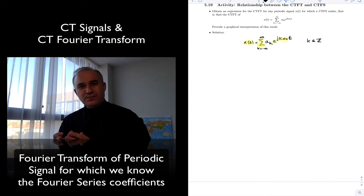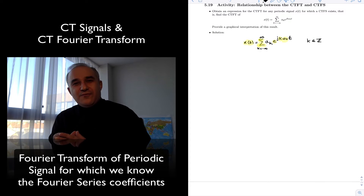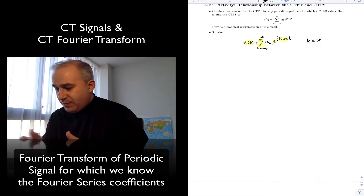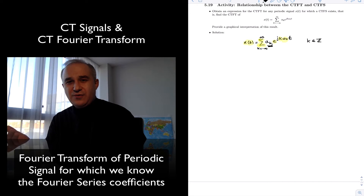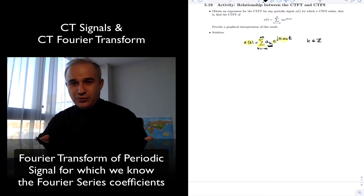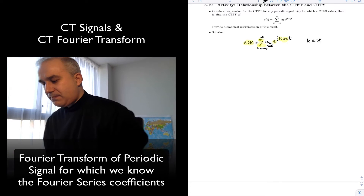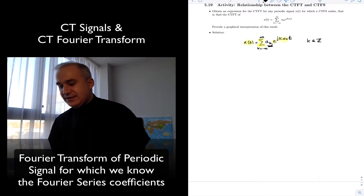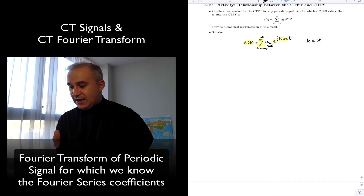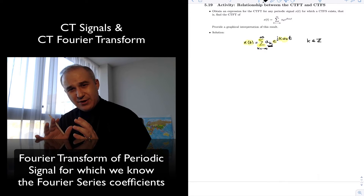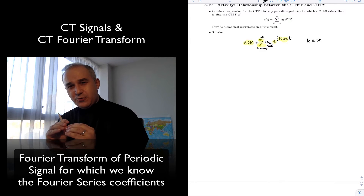So now we are asking: what will be the Fourier transform? If you know the Fourier series coefficients ak, can you find the Fourier transform rapidly, or do you have to do it all over again? The answer is that there is a relationship between the continuous time Fourier transform and these ak coefficients. Let's think about it before doing the mathematics.